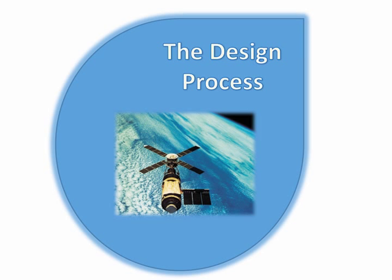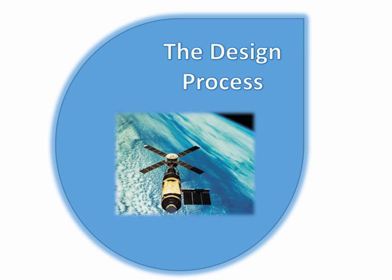The design process is given here in five or six different steps. You start at the red — consider the problem — and go through the series of steps we're going to talk about in this slideshow. At the end, you decide whether you need to redesign or whether you're done. We're going to start now with 'Consider the Problem.'